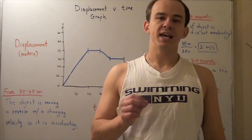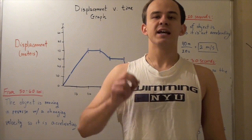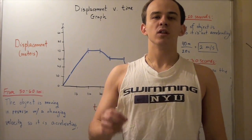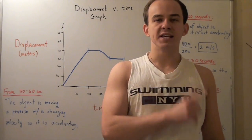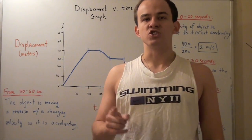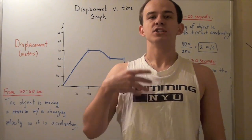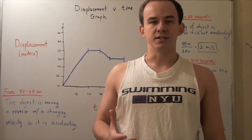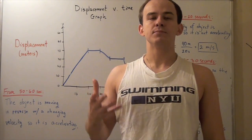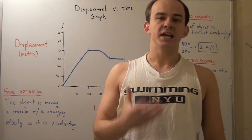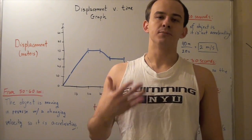Recall that displacement is a vector. That means it has both magnitude as well as direction. Although sometimes displacement and distance will mean the same thing, for the most part they're two different things. Distance is the actual path our object took, while displacement is the net path our object took.